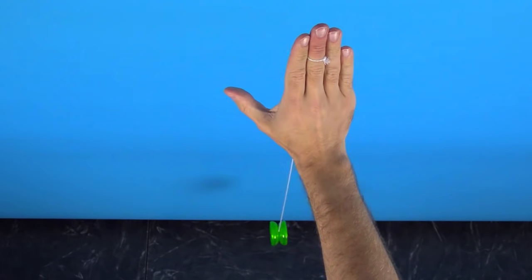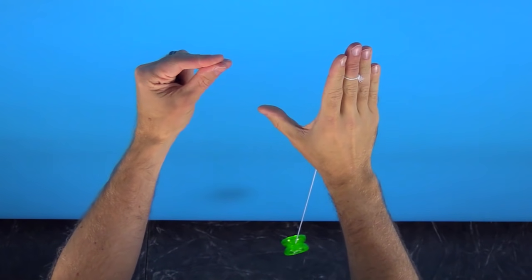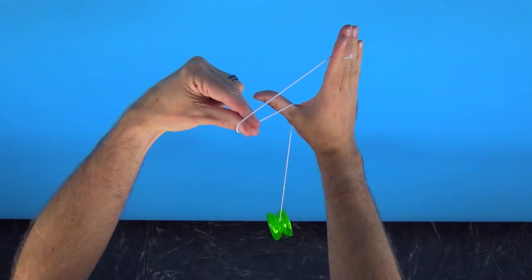Let me show you that one more time from a different angle that will definitely help you out. Again, to start you're just going to extend your yo-yo hand forward, and make sure to extend your thumb as well. Then pinch your thumb and the first two fingers of your opposite hand together, and then pull the string through your yo-yo hand just like a slingshot.